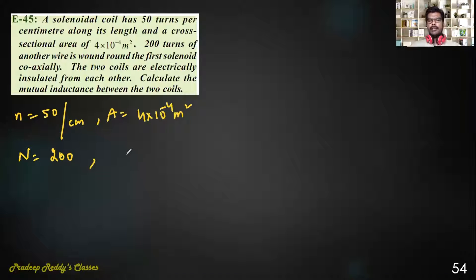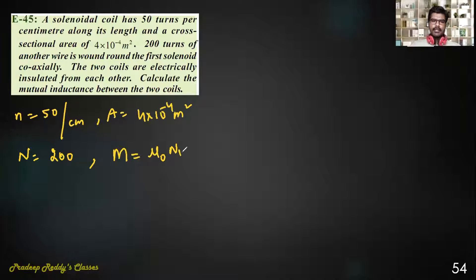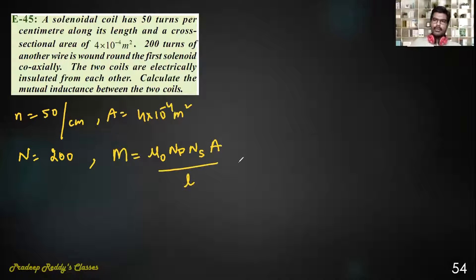Mutual inductance between the two coils is equal to μ₀ × N₁ × N₂ × A / L. The primary coil has n = 50 turns per centimeter, which is the number of turns per unit length.